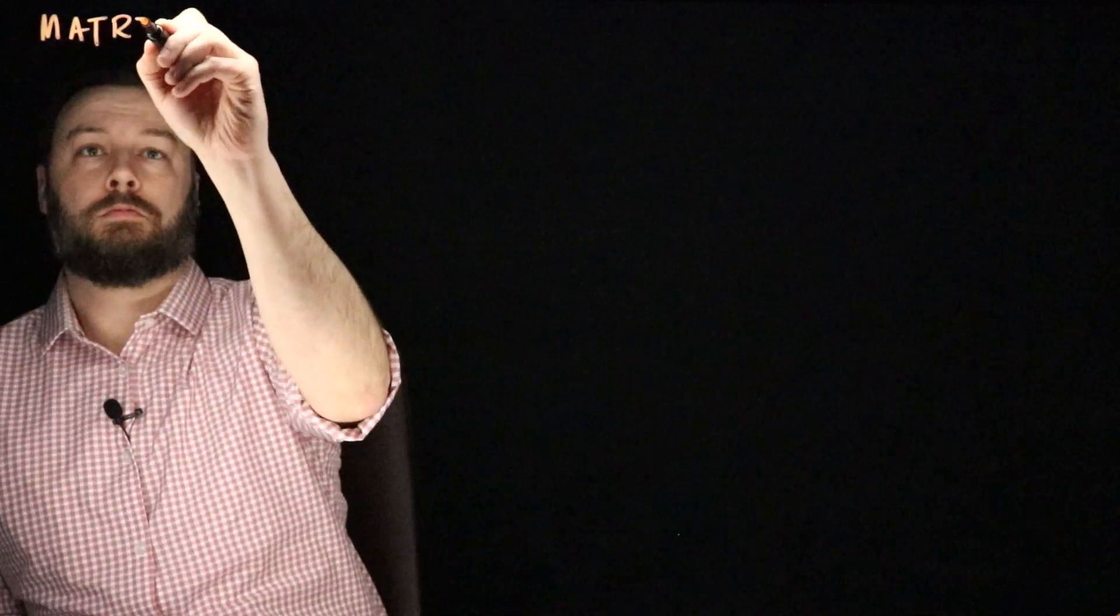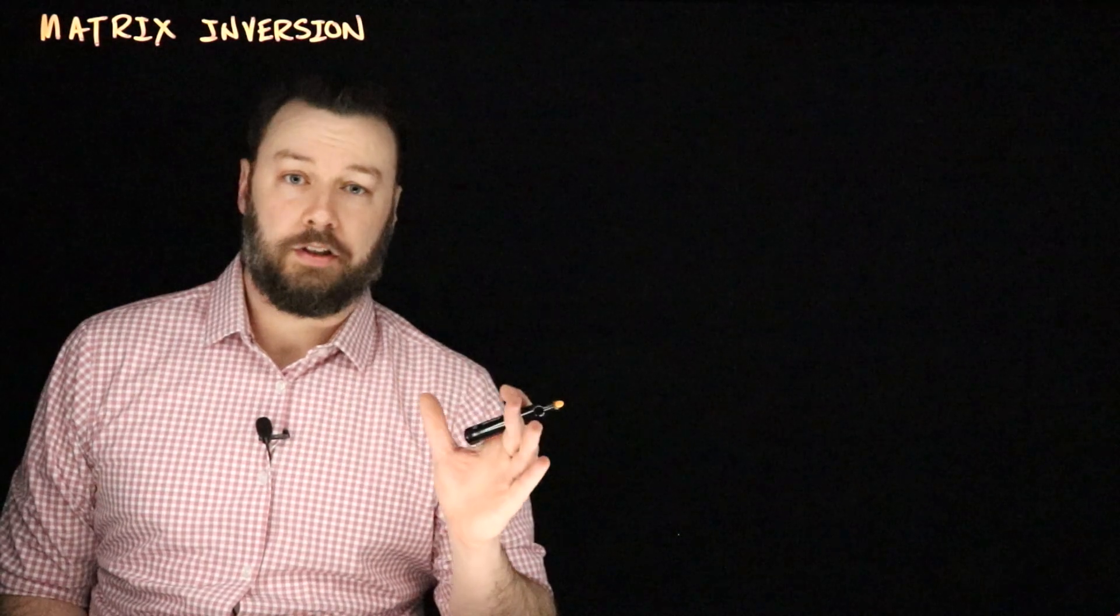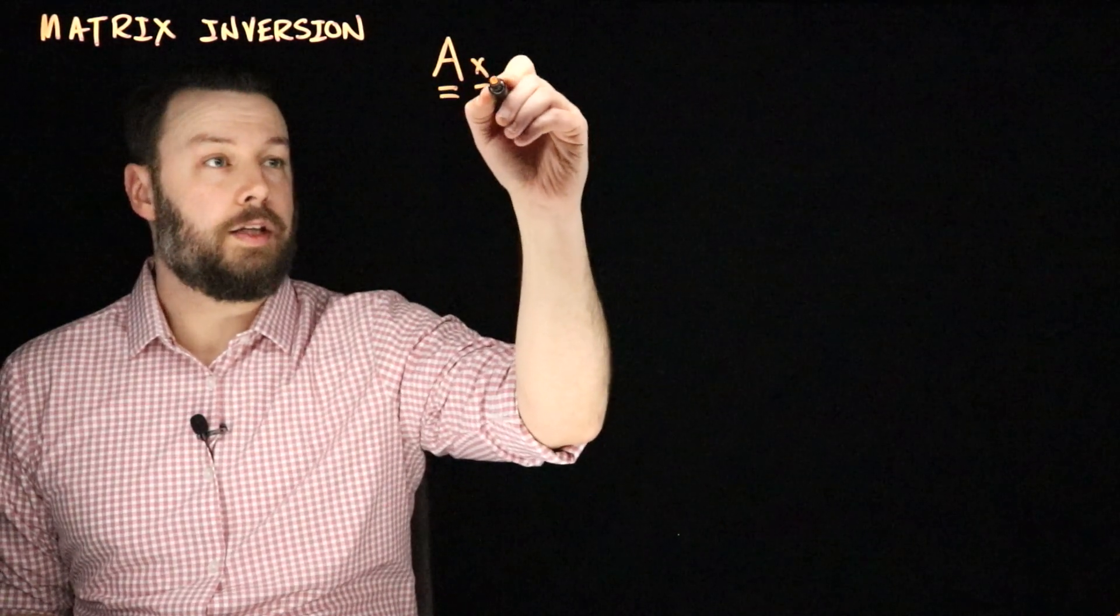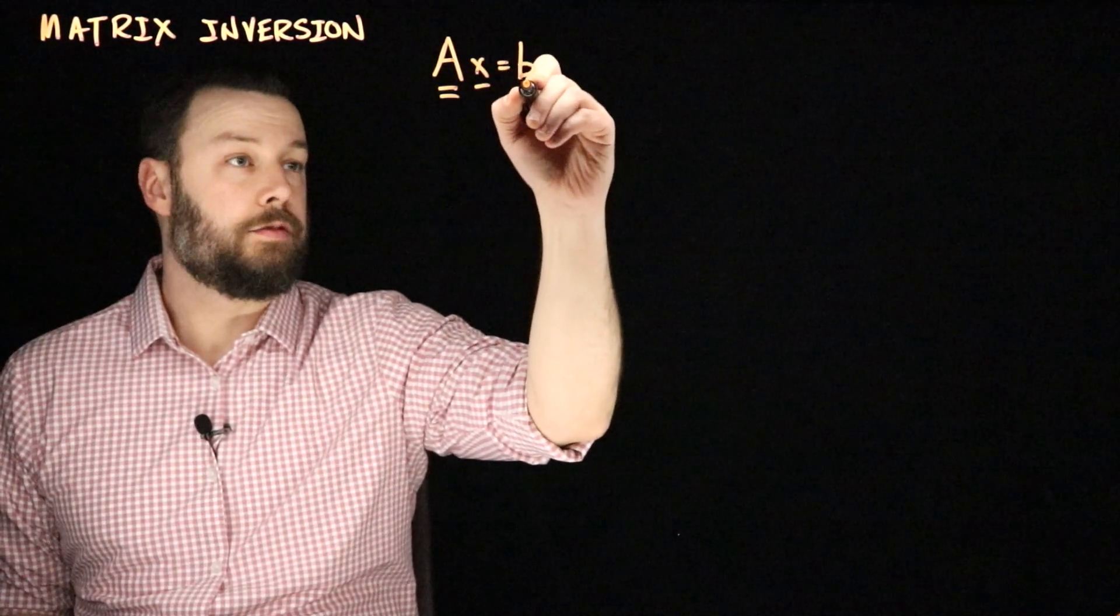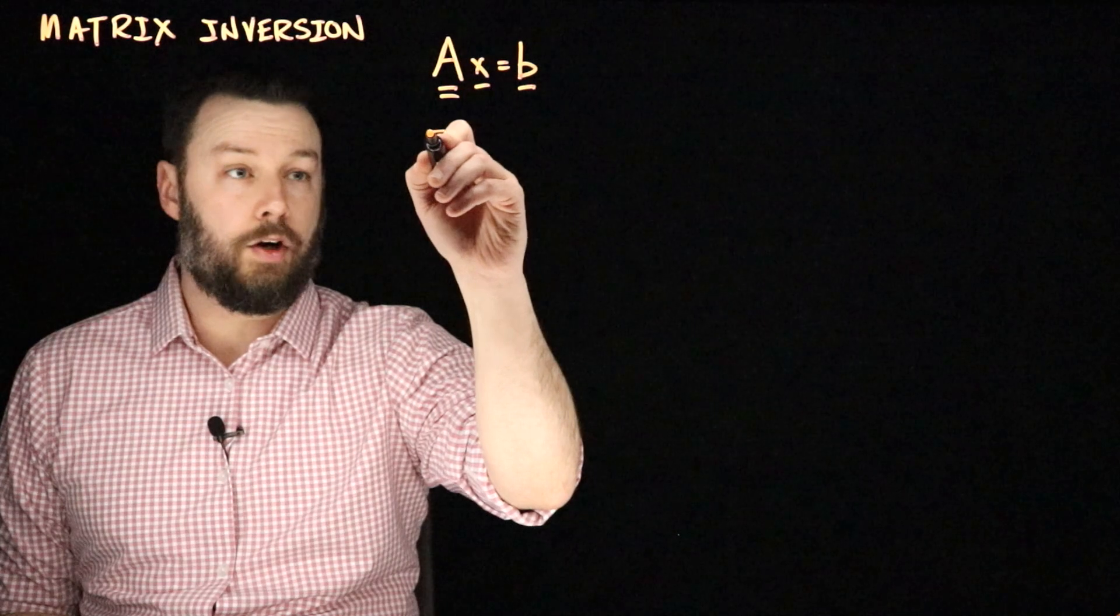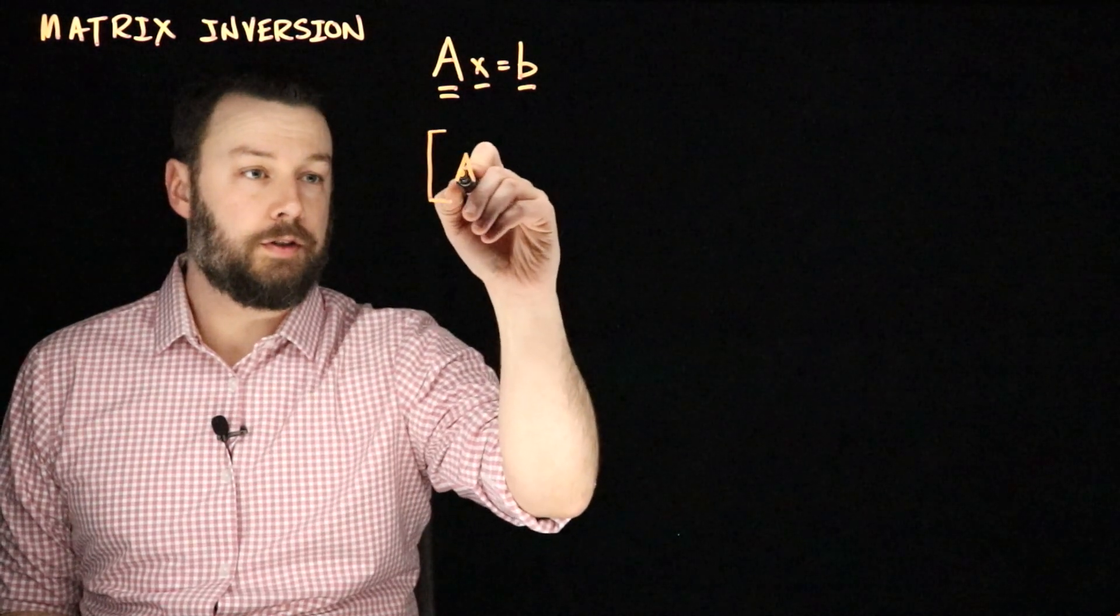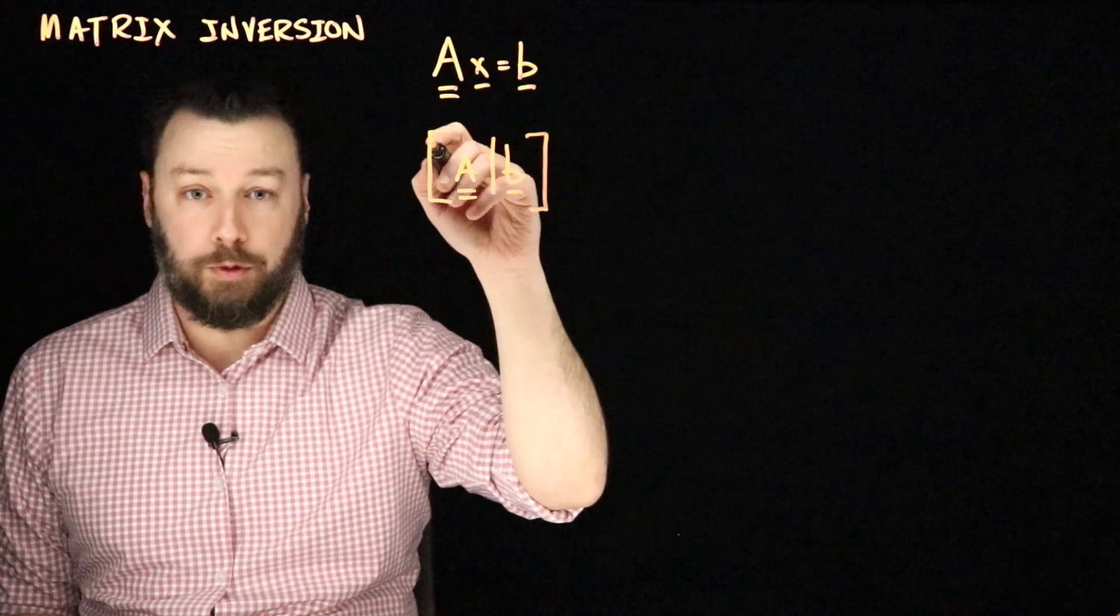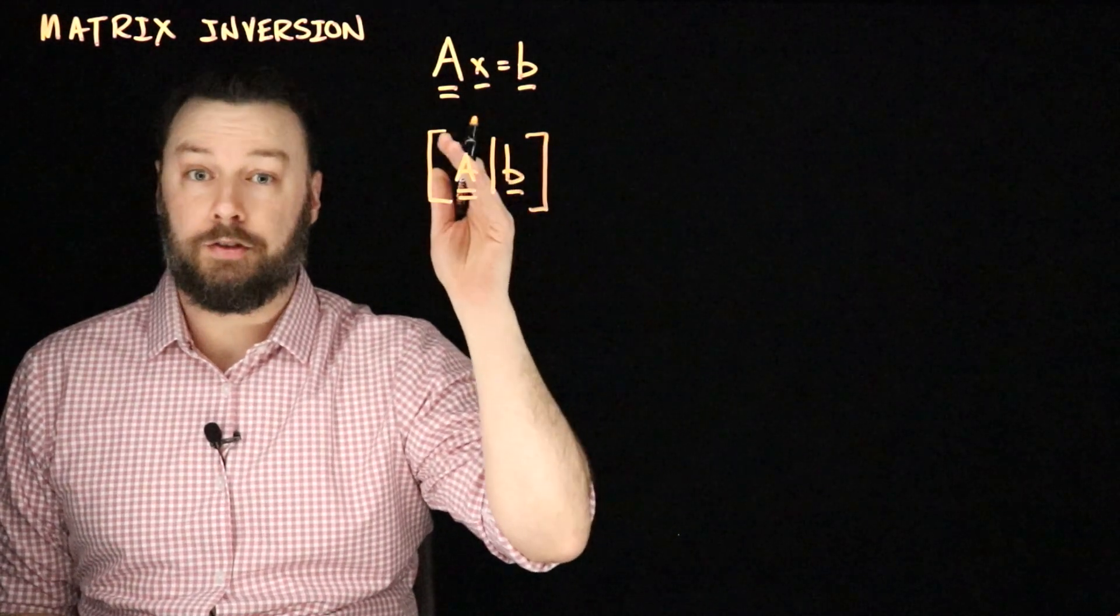In the last video, we talked about solving linear systems with Gaussian elimination. Today we're going to talk about matrix inversion. Just to remind you how Gaussian elimination worked, we started out with a linear system that looks something like this: we have a matrix A, some unknowns x, and they equal a vector b. Our goal is to recover x, and we do that by drawing an augmented matrix. Then we manipulated this until we had it into reduced row echelon form, and then it made it easy to read off the solution.